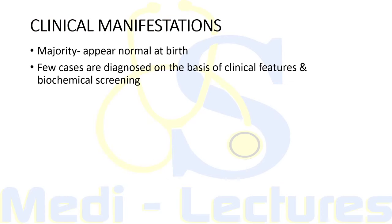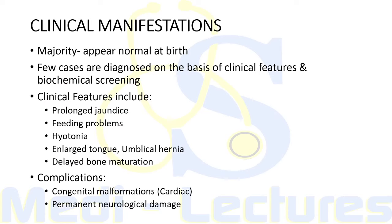The majority of infants with congenital hypothyroidism appear normal at birth, and a few cases are diagnosed on the basis of clinical features and biochemical screening. Clinical features include prolonged jaundice, feeding problems, hypotonia, enlarged tongue, umbilical hernia, and delayed bone maturation. Complications include congenital malformations, especially cardiac malformations, which are four times more common in congenital hypothyroidism.